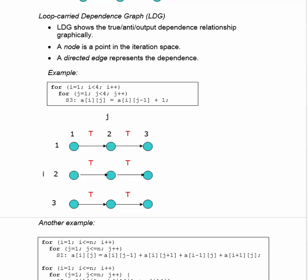A loop-carried dependence graph shows the various dependence relationships graphically. Again, a node is a point in the iteration space — a value of i and a value of j. A directed edge represents a dependence. This shows us that iteration (1,2) for i and j is dependent upon iteration (1,1), because at i=1, j=2, we use a value computed at i=1, j=1 — specifically A sub 1, j-1. So we have this edge from (1,1) to (1,2). This is a true dependence because the value computed in the previous iteration of j is used in the current iteration of j.